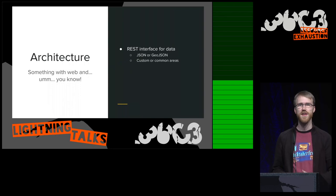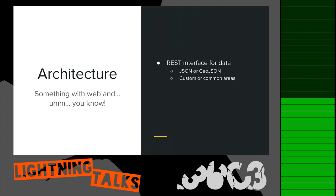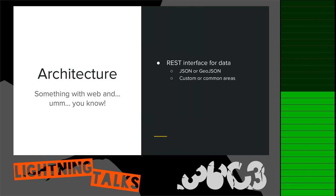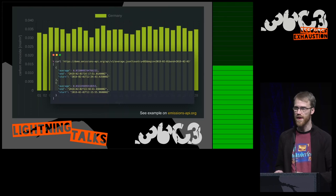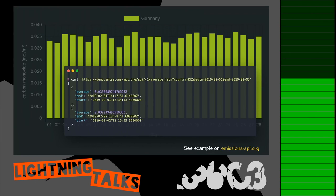We want to make this as easy to access as possible with a simple REST API where you can say 'I want data for this geographic location or area' and get back GeoJSON or some statistical information in JSON format, which you can then use in any web application.